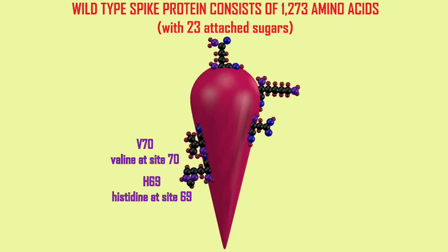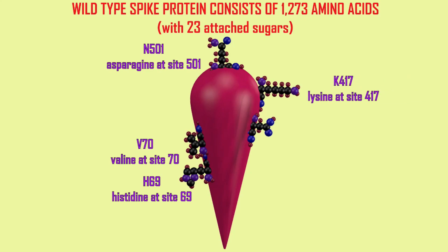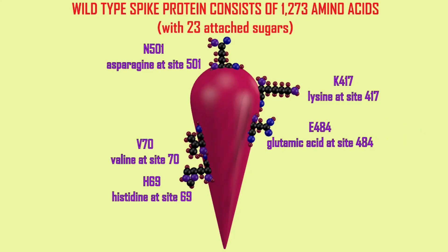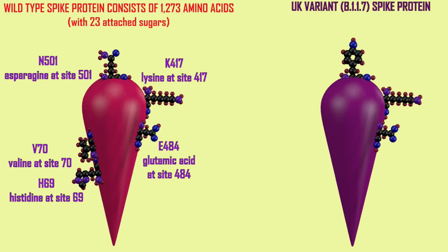I've indicated a couple of positions here. The amino acid histidine is located at site 69, valine at site 70, lysine at site 417, glutamic acid at site 484, and asparagine at site 501. These are the amino acids present in the original sequence — let's call that the wild type.